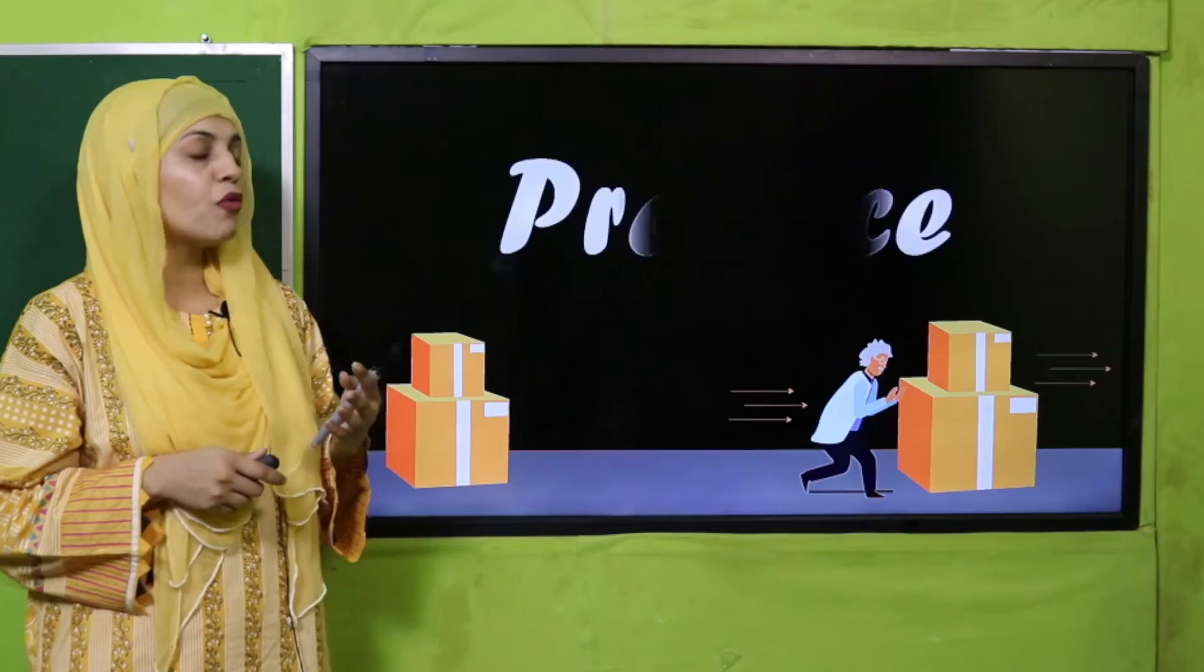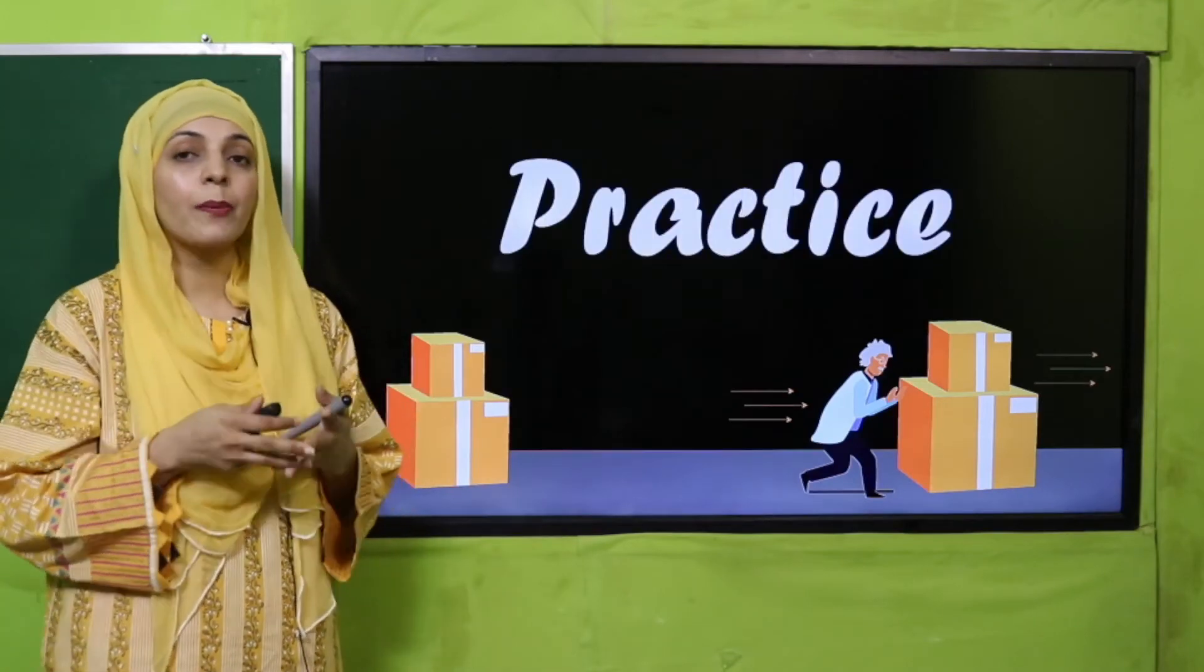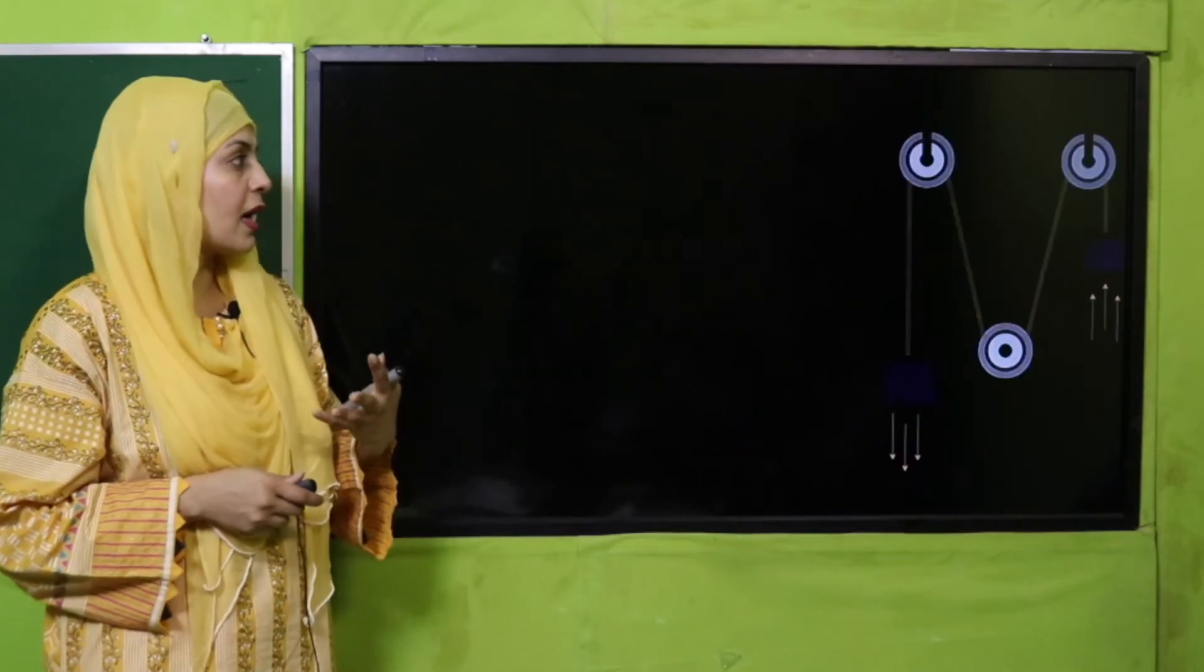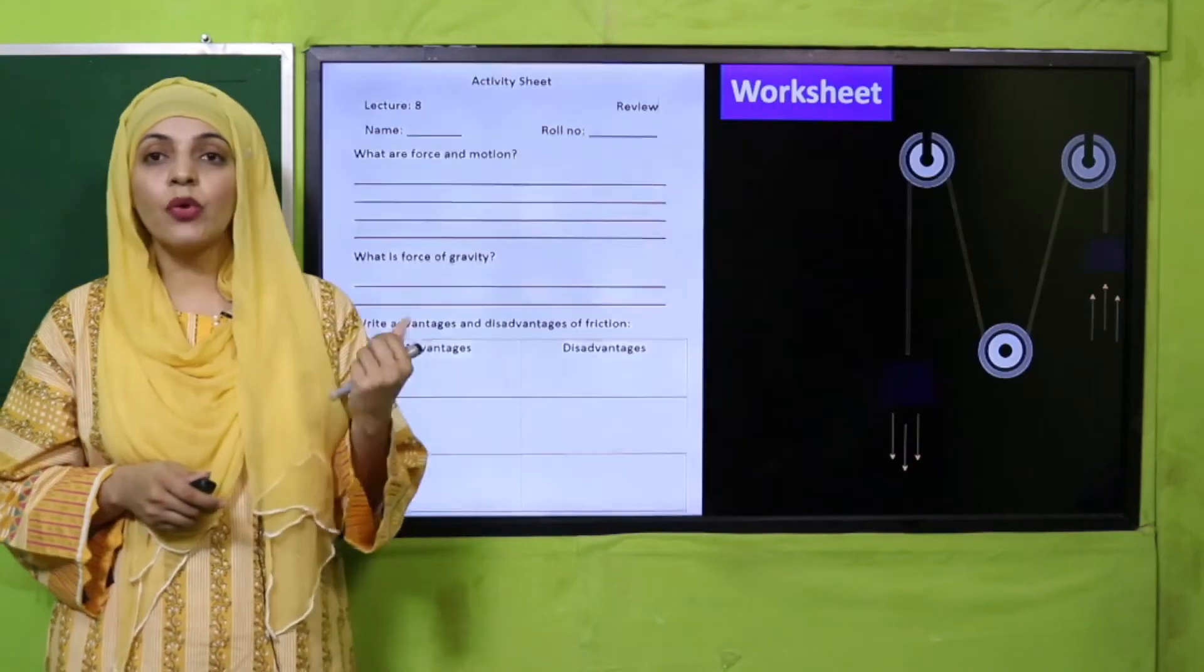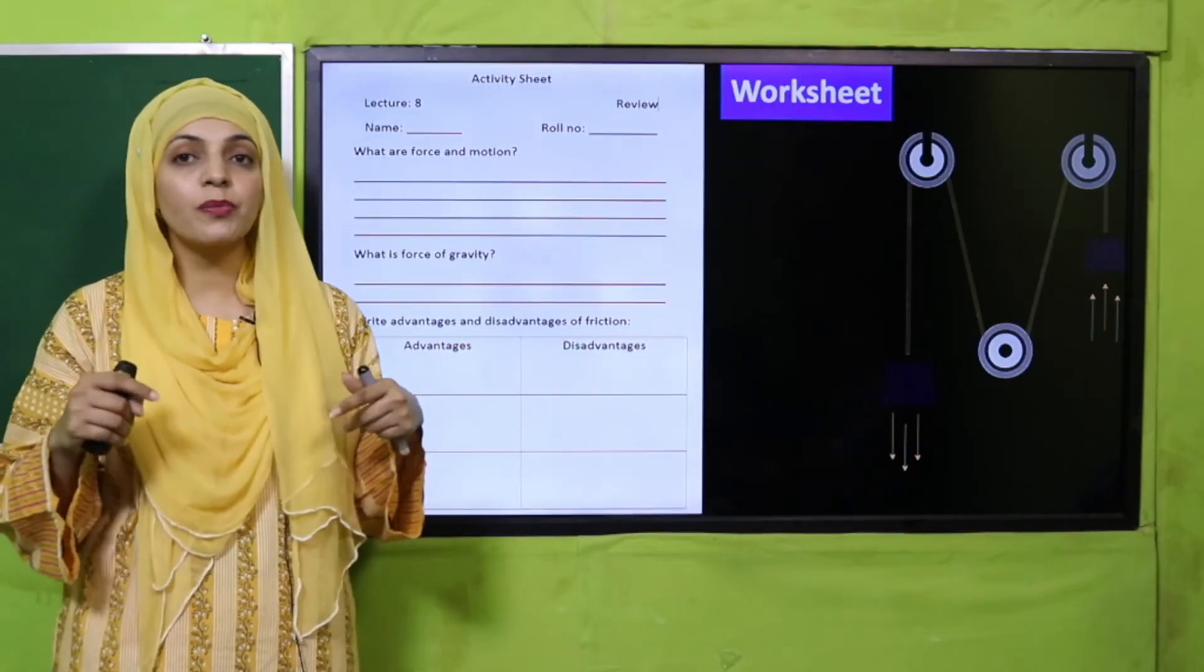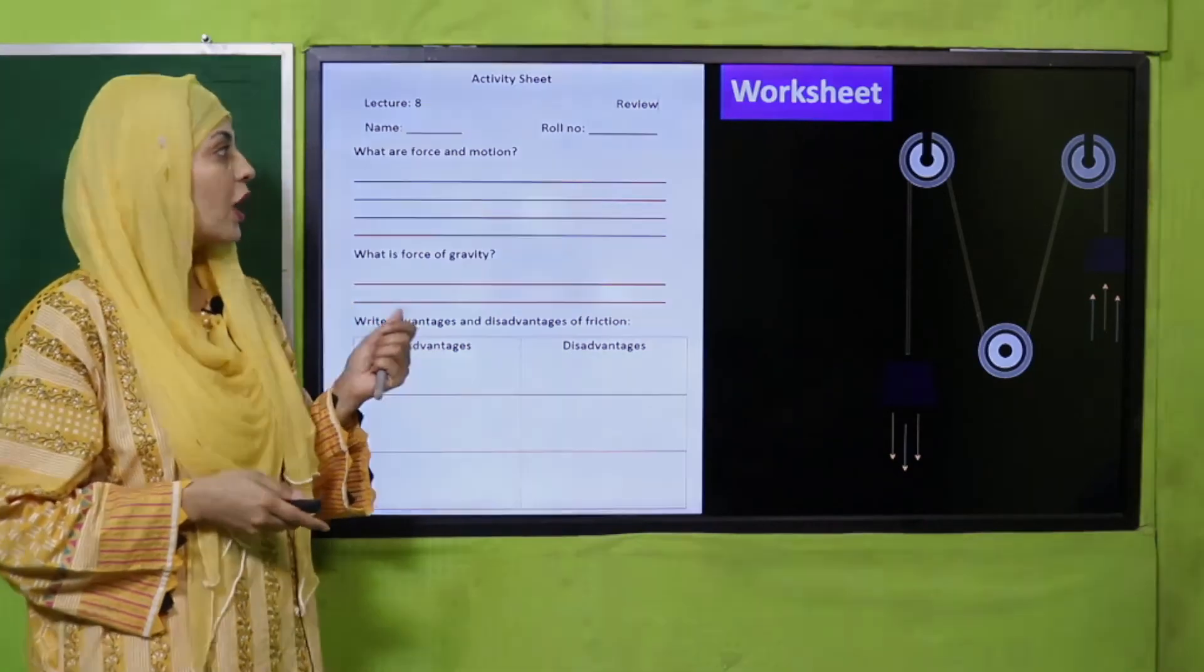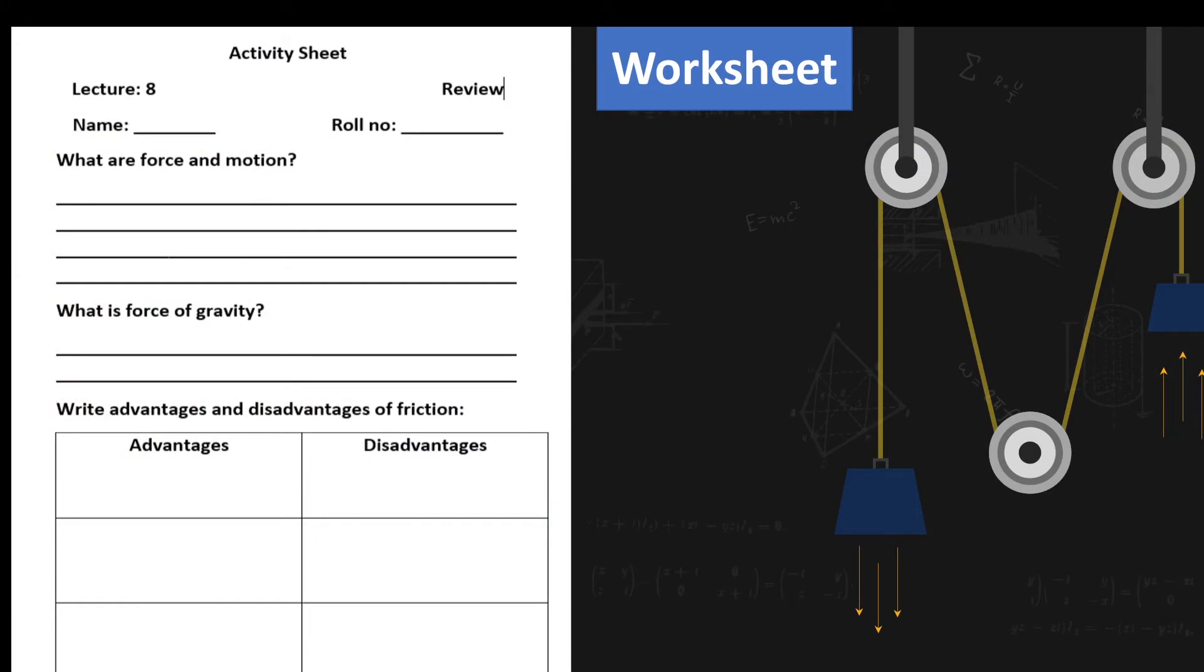Now let's quickly move forward towards the practice, for which I will give you an assessment sheet so that I can evaluate what you have learned from this chapter. You can download this assessment sheet or worksheet from the description box below this video or get it in print form from your teacher. Write down your name and roll number and then quickly start working on the worksheet.